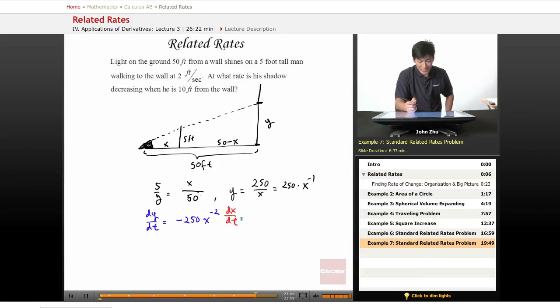Let's go ahead and plug in dx/dt because we know that the man is walking to the wall at two feet per second. So x is changing at a rate of 2 feet per second, which is dx/dt.